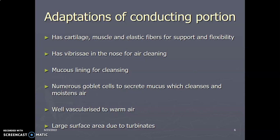What are the adaptations of the conditioning portion? The conduction portion has cartilage, mainly hyaline cartilage, and there's the presence of muscle and elastic fibers — these help give it support. These are connective tissues, so they give support and flexibility. There is also cilia in the nose, like hair-like structures for cleaning the air. There is mucus that lines the conducting portion, and this helps to cleanse the air because the mucus traps the particles. The goblet cells are the ones that secrete this mucus, which helps to cleanse.